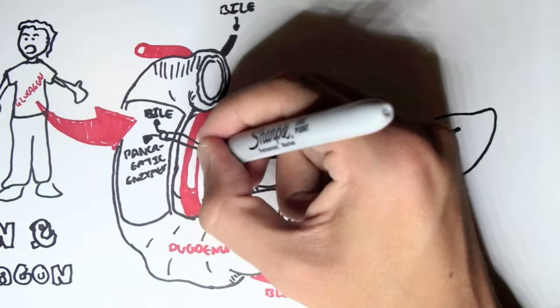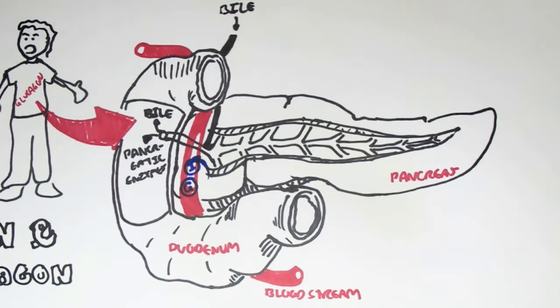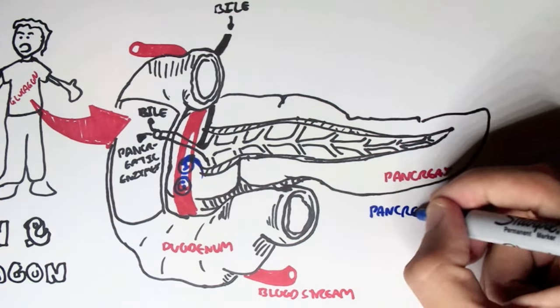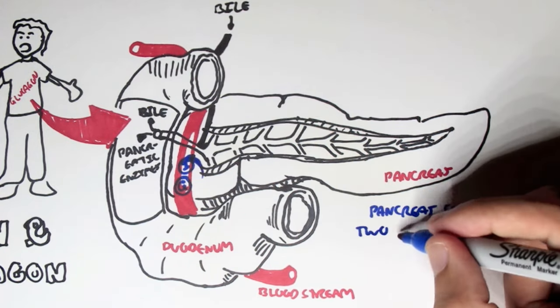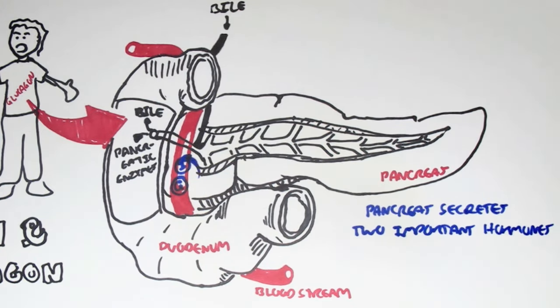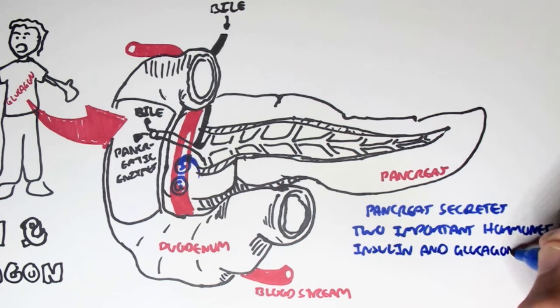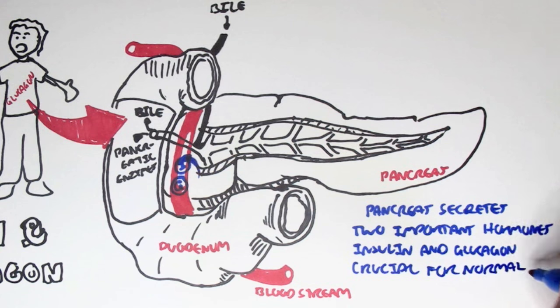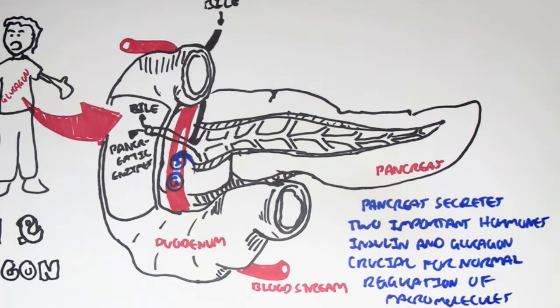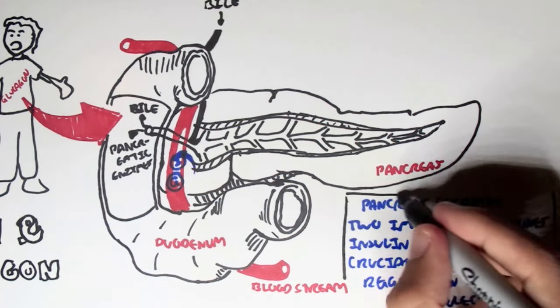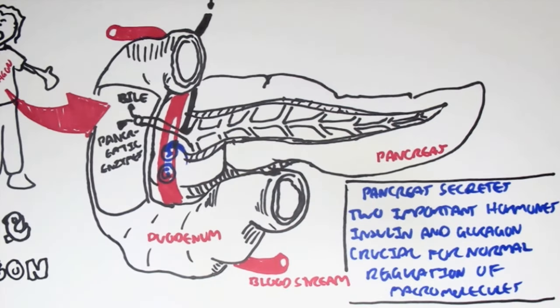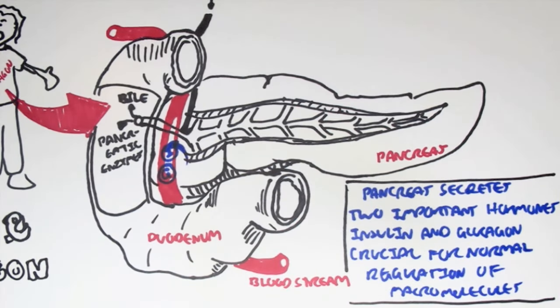And I'm drawing insulin as an I, and glucagon as a G, circled in blue here. And what they do, as I mentioned, is that they regulate metabolism. They keep the homeostatic conditions of metabolism. So to summarize, the pancreas secretes two important hormones, insulin and glucagon, crucial for the normal regulation of macromolecules. And therefore, the homeostatic conditions of metabolism in our body, for blood glucose levels, for example.